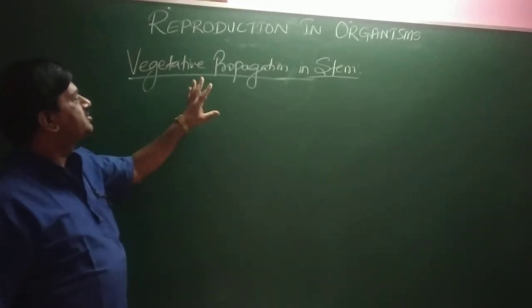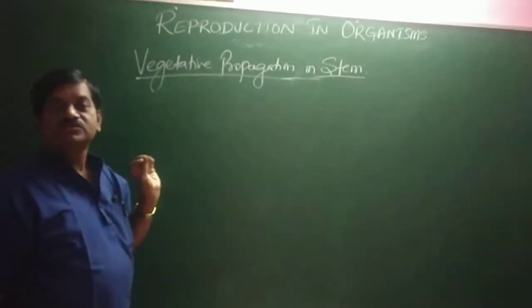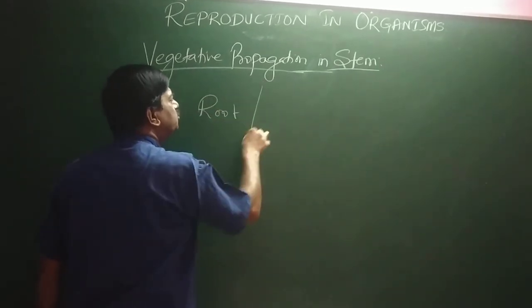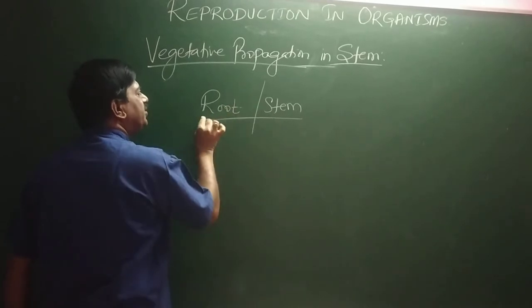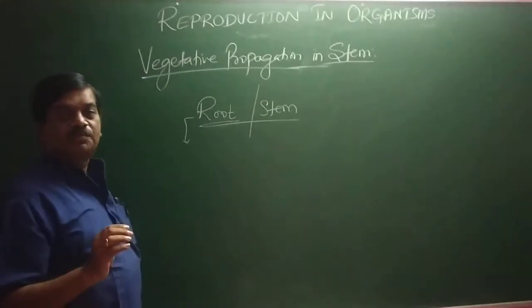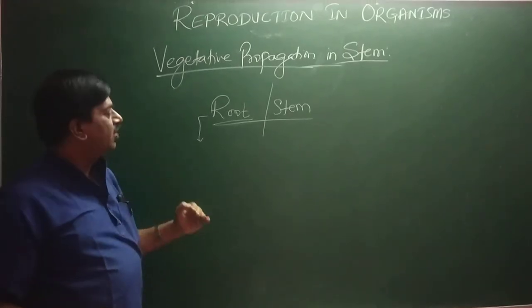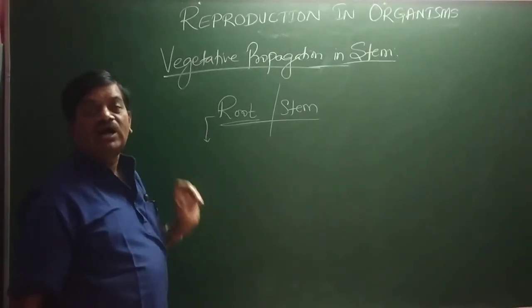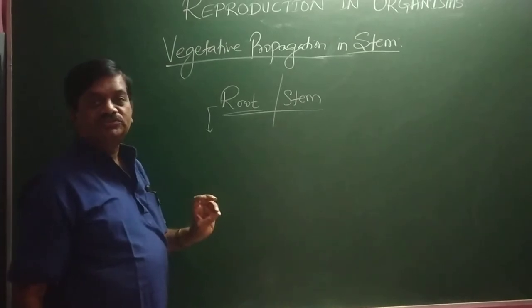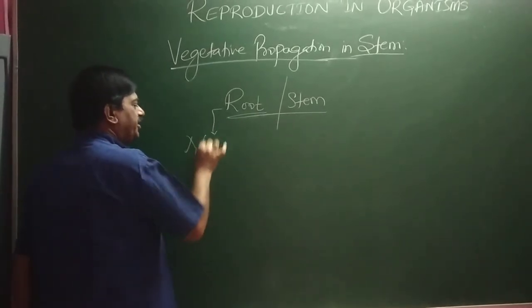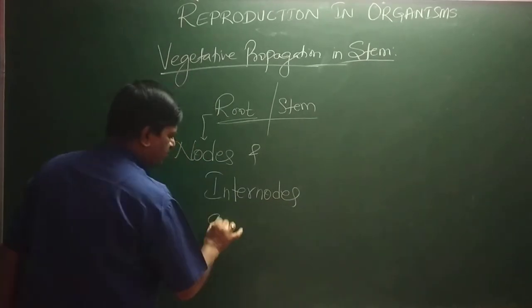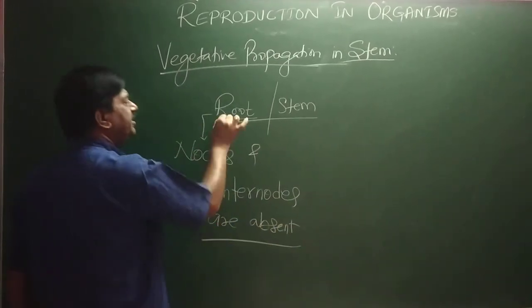Dear students, today we are going to discuss vegetative propagation in stem. Before going into stem, we are going to see the difference between root and stem — how to identify root and how to identify stem in the plant body. Roots are always present below the ground, hence they are underground, and have the capacity for absorption of water and minerals. Importantly, nodes and internodes are absent in roots.